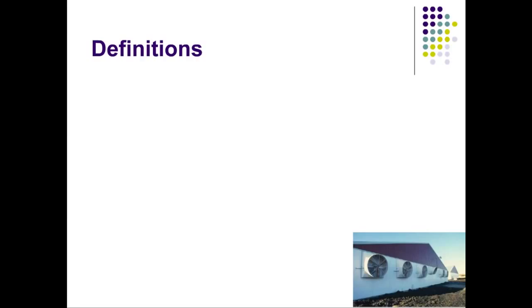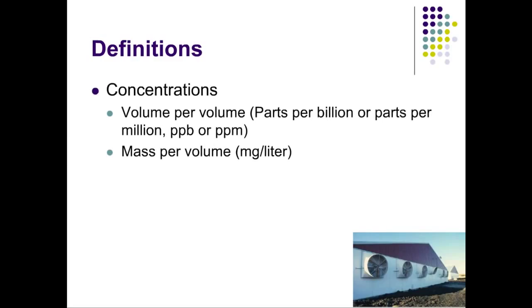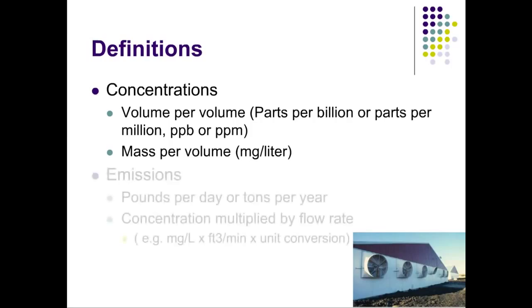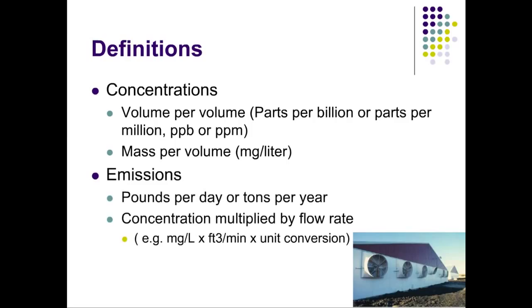To better understand what air quality regulations mean, let's look at some basic definitions and concepts. Concentrations measure how much of a particular pollutant can be found in a relative amount of air, commonly in parts per billion or parts per million. Milligrams per liter will quantify a pollutant's mass in a static volume. Other pollutants are regulated on emission levels — how much is released over a period of time, such as pounds per day or tons per year. To accurately measure emission levels, both the concentration and volume of exhaust air must be known; emissions is the product of these two values.